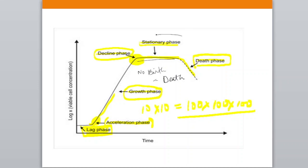It will have a stationary phase here. After that, decline — meaning the death of microorganisms — will start due to accumulation of toxins and gases and depletion of nutrients. That was about your bacterial growth curve in brief.